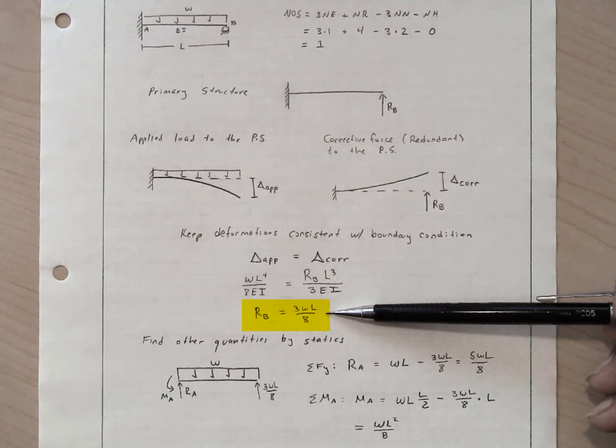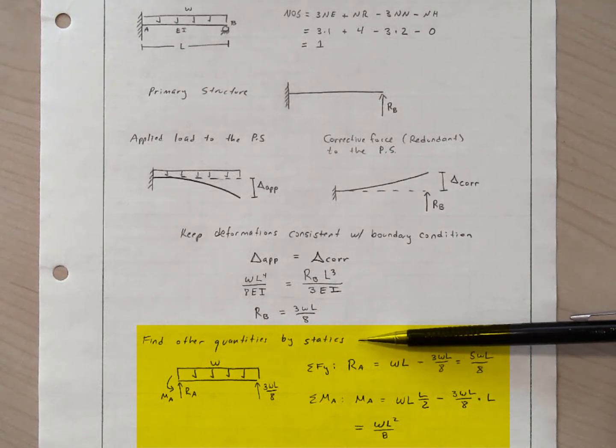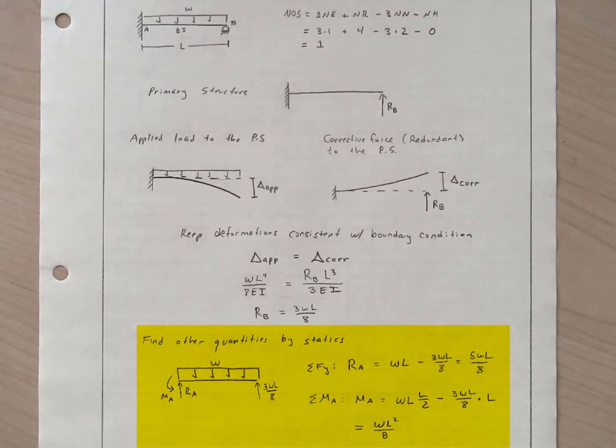And then once we have the unknown force, we go back to previous methods for determinate structures. We apply those to find any other quantity that we're interested in. This ends the conceptual introduction to the flexibility method.